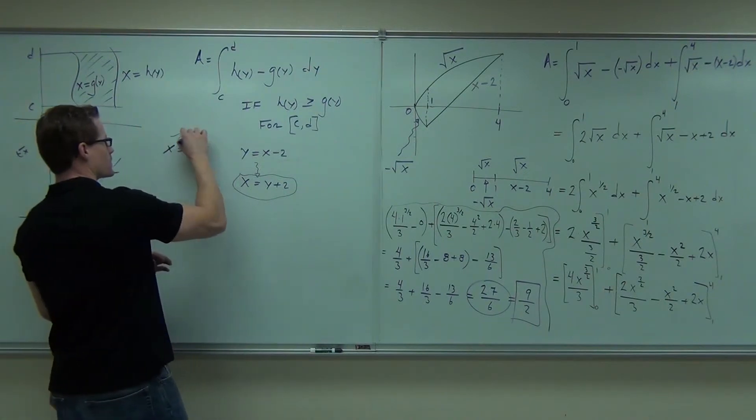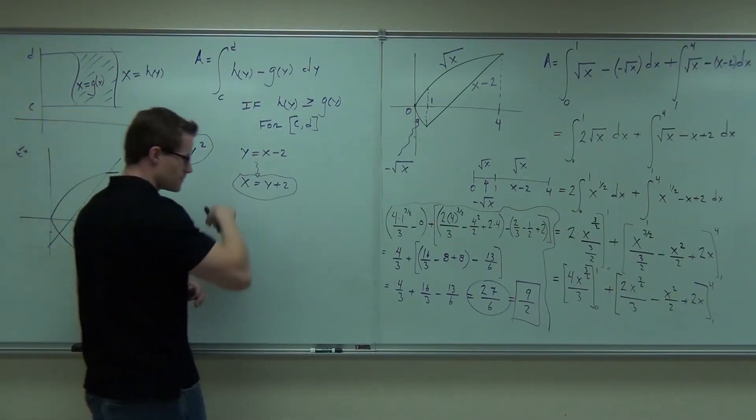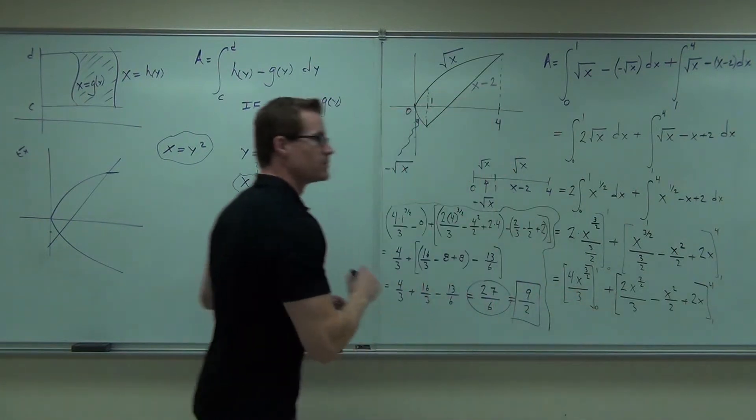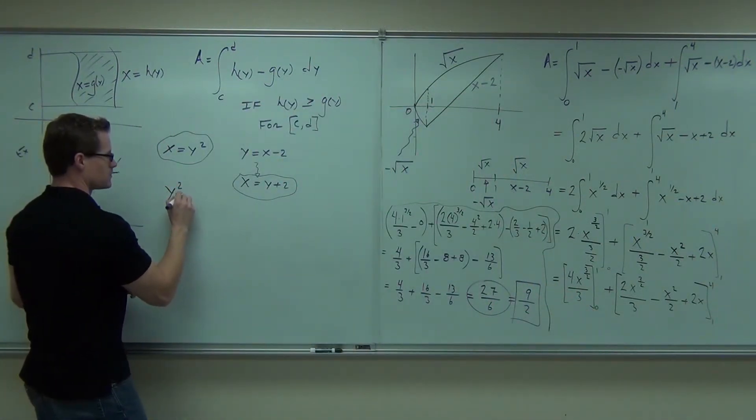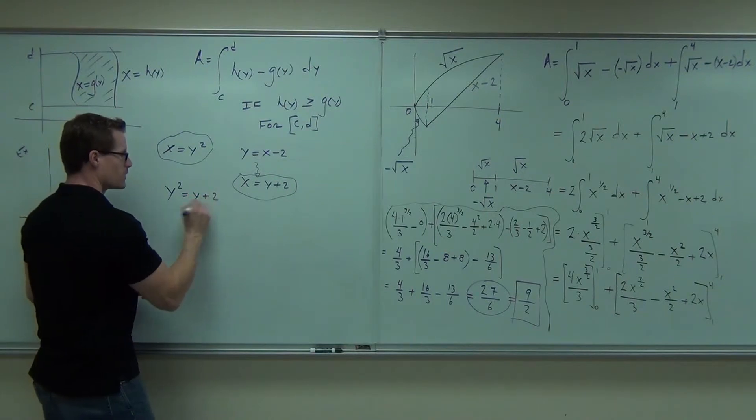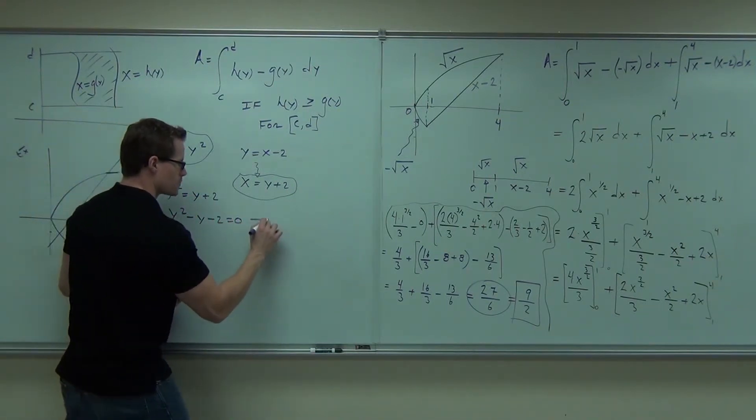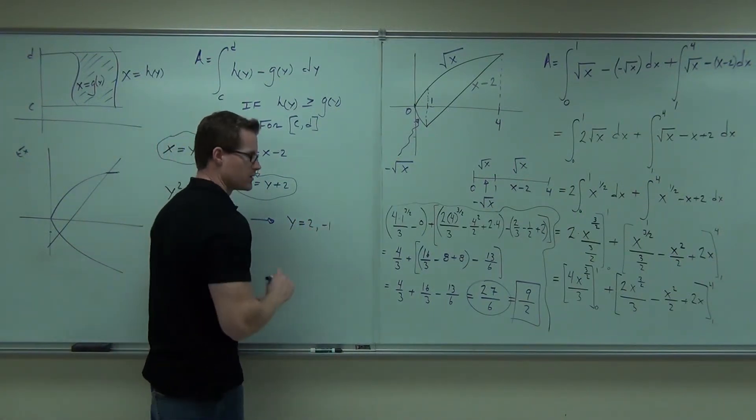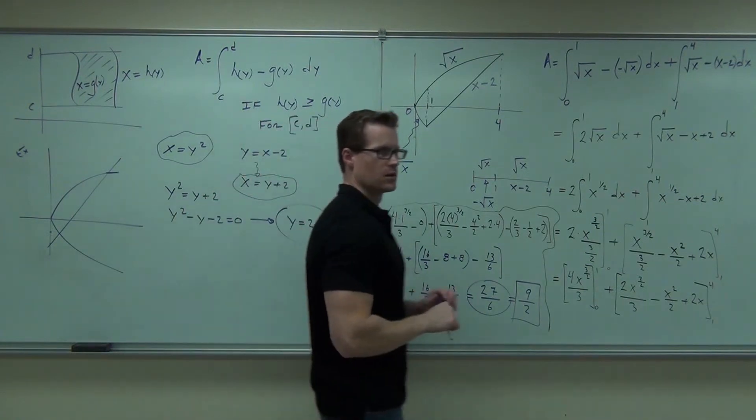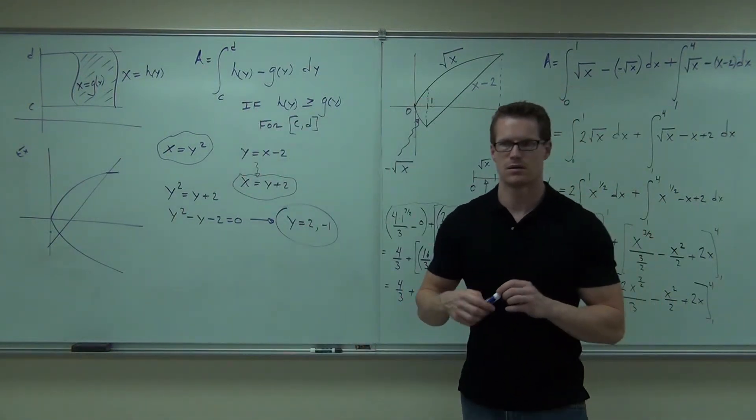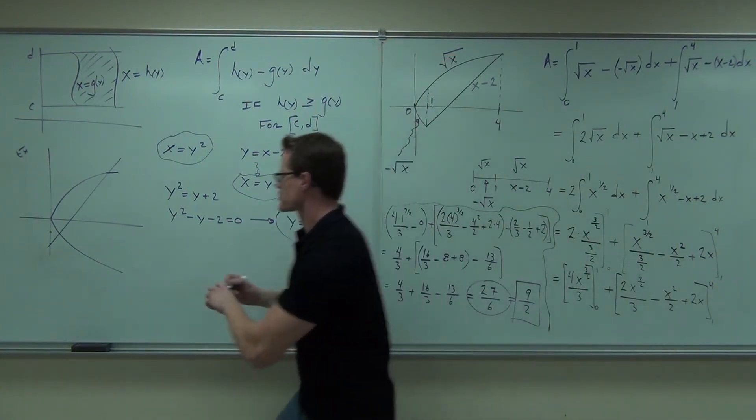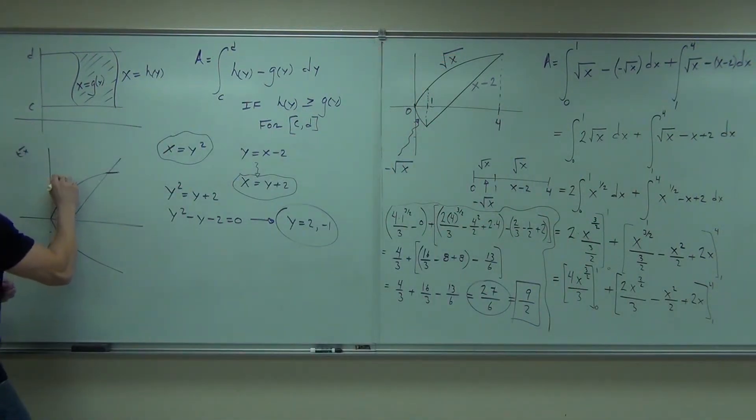Those would be the two functions I'm comparing. If you set them equal to each other. I'm going quickly through this because this is exactly what we've done before. You're going to get the same exact points that we did before. Y equals 2 and negative 1. Are you still okay with that?